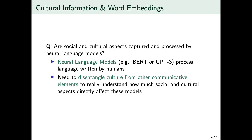When looking at neural language models — models like BERT or GPT-3 that process language written by humans — cultural information is clearly present. What we have to do is figure out ways to disentangle culture from all the other communicative elements captured by those models, which are usually the strongest players and tend to dilute and hide the more fine-grained cultural aspects we are interested in.